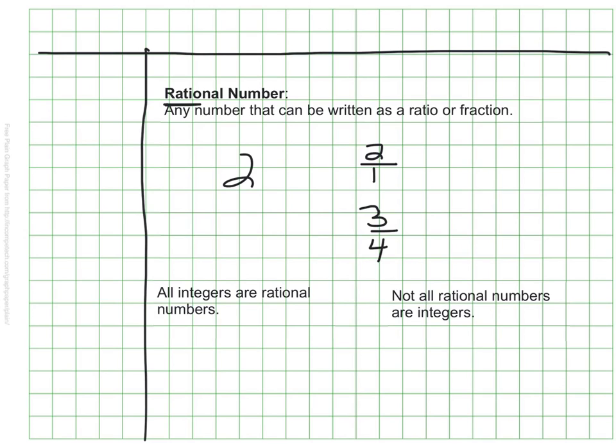So remember, this video was a lot of vocabulary. That's all it really was. We wanted to figure out what vocabulary we need to be able to describe working with negative numbers. We saw whole numbers, opposites, integers, absolute value, and rational numbers. We'll be applying this vocabulary as we go forward with this material. We'll see you next time.